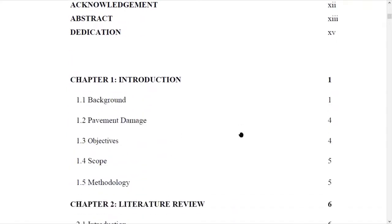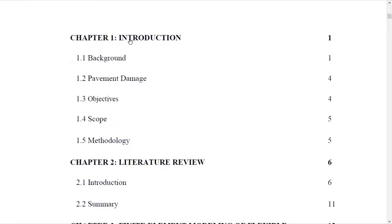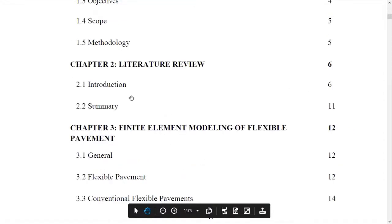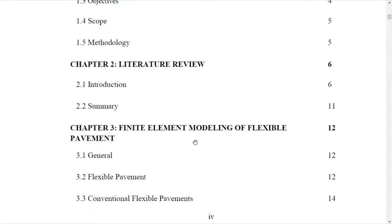I am going to discuss these different chapters and I have written the topics here. You can see Chapter 1 is the Introduction, Chapter 2 is the Literature Review, with page numbers given in the table of contents, and Chapter 3 is the Finite Element Modeling of Flexible Pavement. Whatever you are doing, you should provide it in Chapter 3, as it must be based on your methodology. If you are doing any testing, you should provide the title of Chapter 3 accordingly.